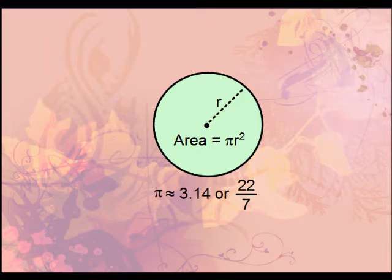Pi is approximately 3.14 or 22 over 7 — either of those two values will give you a very good approximation. The majority of this video is simply going to focus on different questions that involve the area of a circle, using this formula.